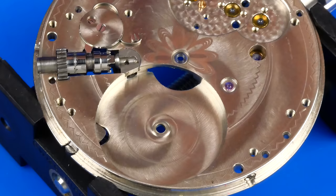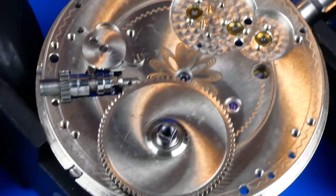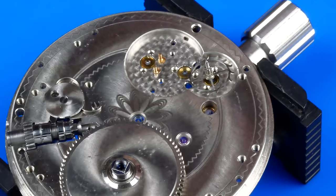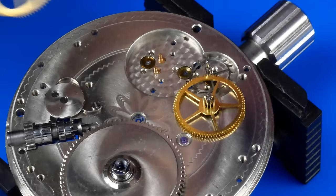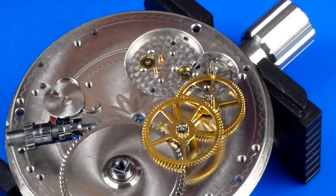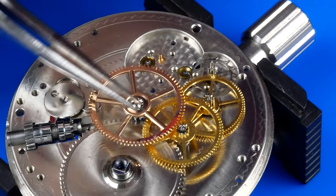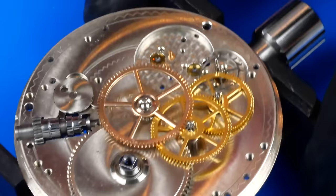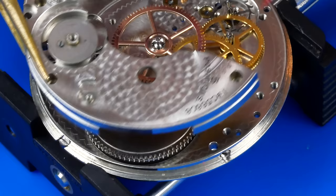D5 lubricates the bushing where the mainspring arbor turns before the barrel is lowered into place. The escape wheel, the fourth wheel, the third wheel, and the second wheel are installed. I believe the center wheel in these movements have some gold content, though I'm not sure if it's just gold filled or solid gold. In any case, it's not your typical brass wheel.